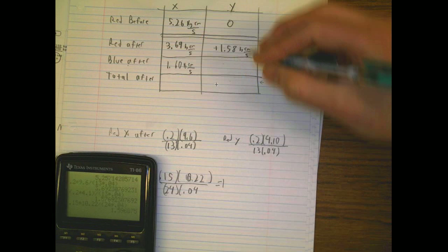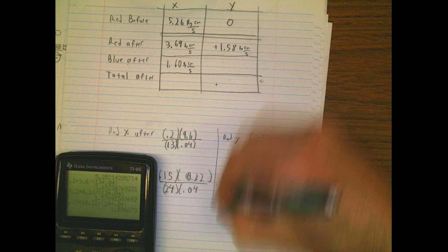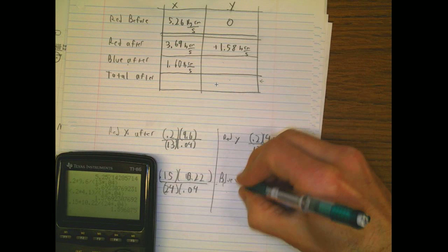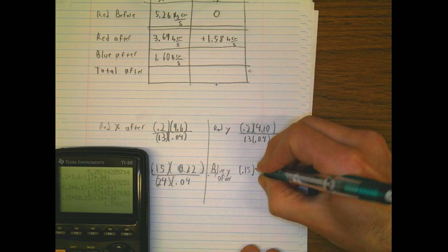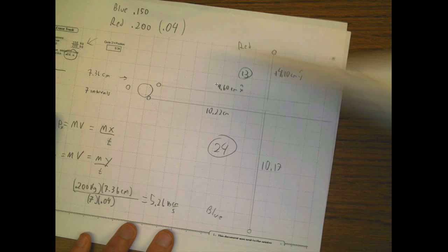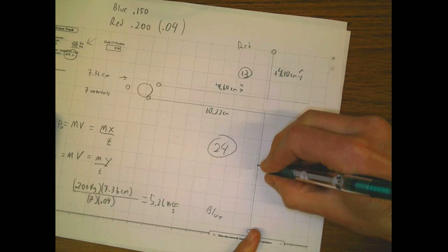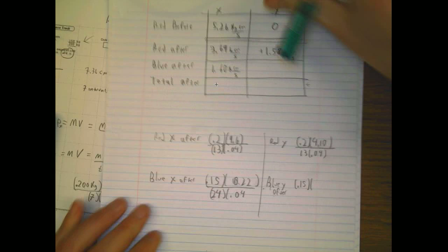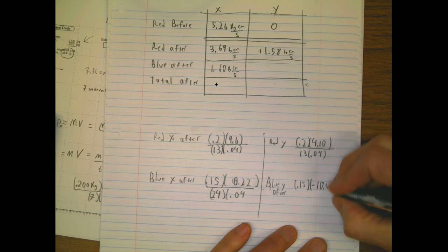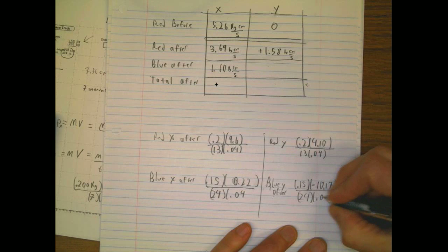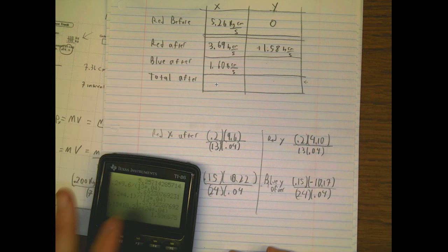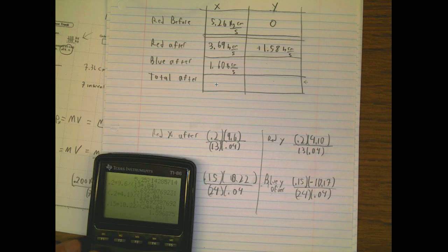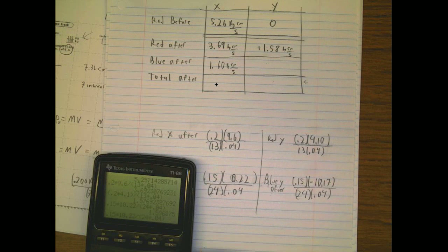And then, let's do blue y after. The blue y after, 0.15 times, and then what was that? That's down 10.17. I've got to make that guy negative. So down 10.17 divided by 24 times 0.04. And there's too much glare there. So let's go second entry, and then change that to 10.17.